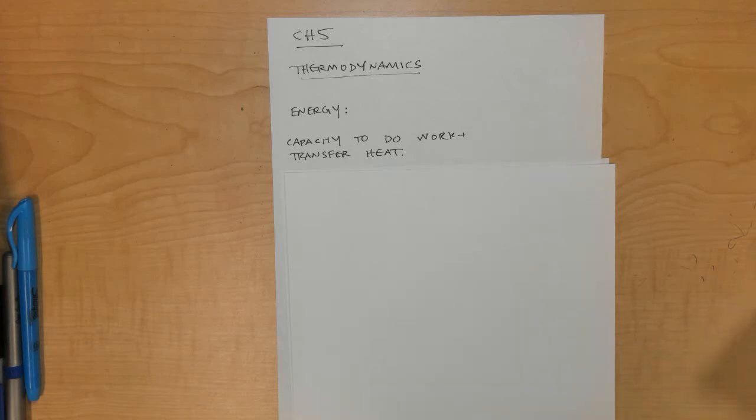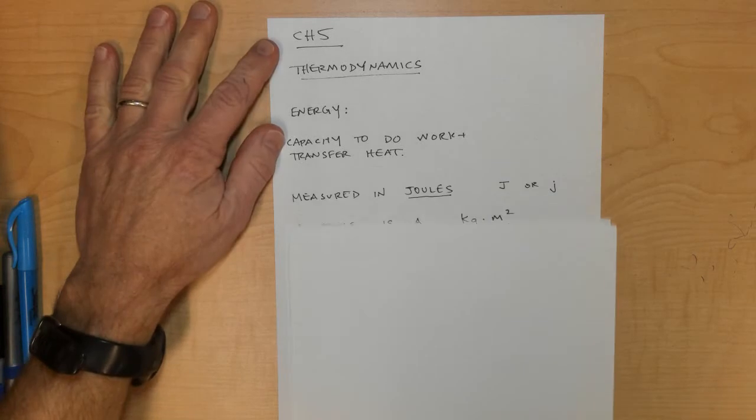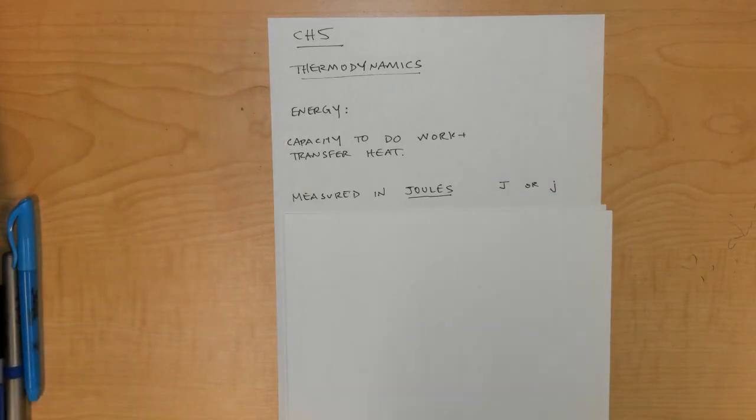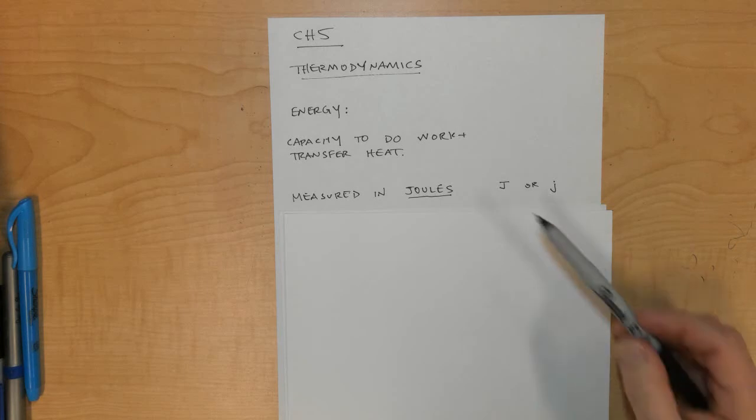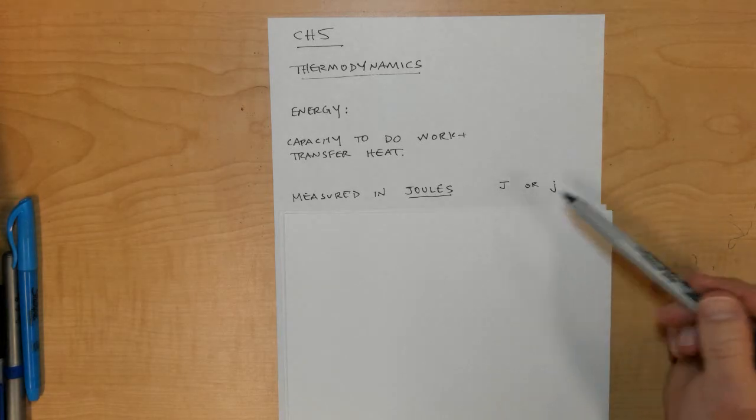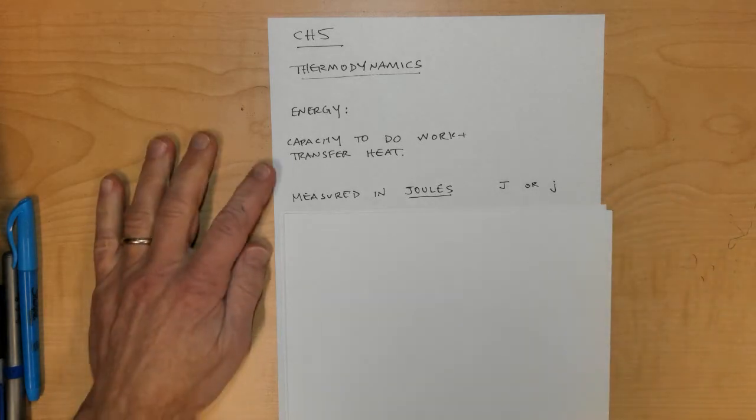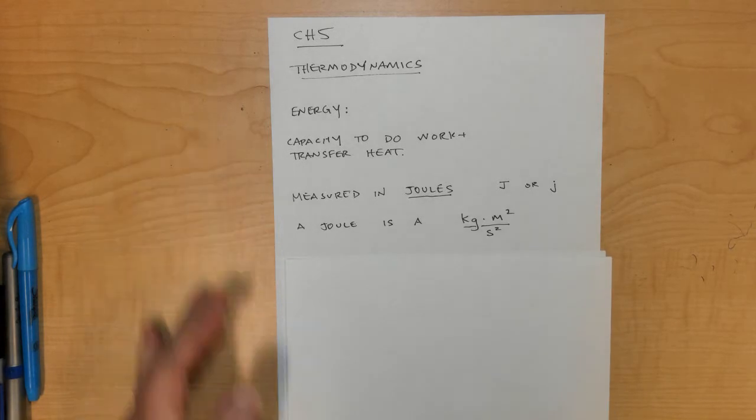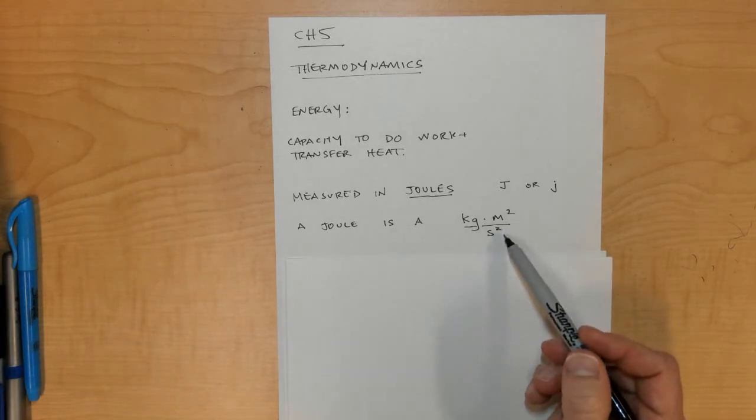Energy is measured in the metric system in something called joules. Joules are symbolized by a capital letter J or a lowercase j. The joule is defined as a kilogram times a meter squared per second squared in terms of units.